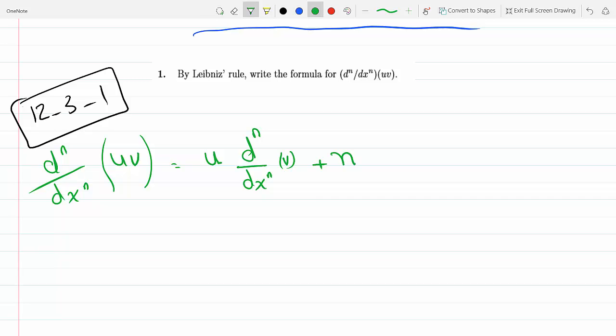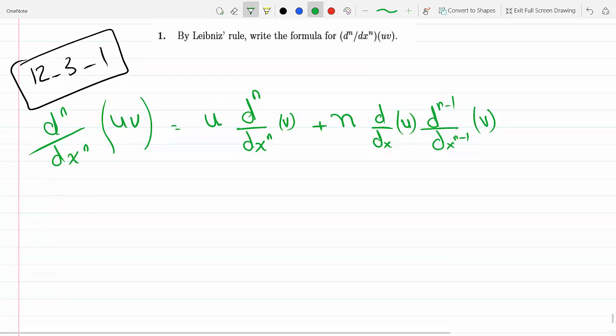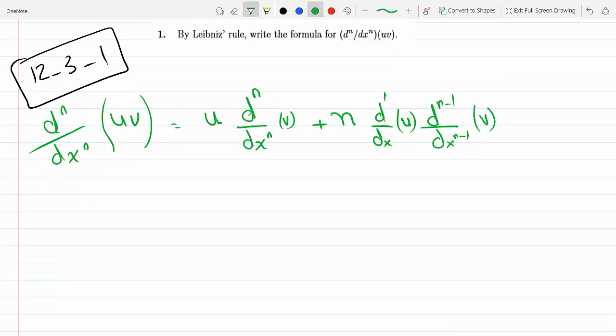Then on the next step, I can bring the n down. Now the u derivative will go up by one and the v derivative will go down by one. So now I will take the first derivative of u and the (n-1)th derivative of v, such that the sum of the derivatives will still equal to n because 1 plus n minus 1 equals n.